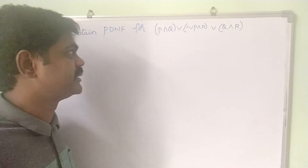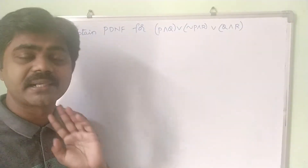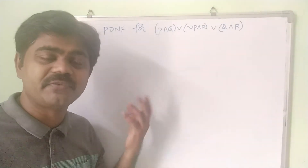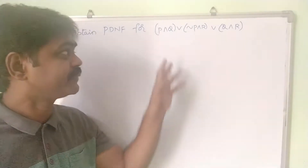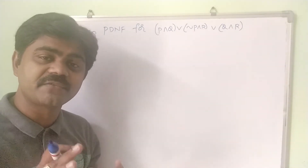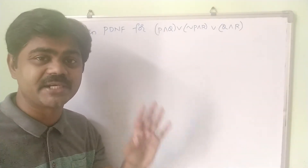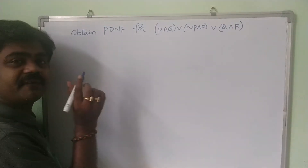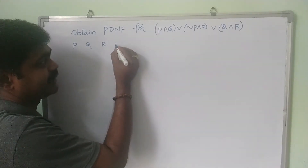The formula has three variables P, Q, R — we need 8 truth values. Notice that P∧Q is missing R, P∧R is missing Q, and Q∧R is missing P. Using the truth table method, we can handle these missing variables. Let's construct the truth table for P, Q, R and write the corresponding minterms.